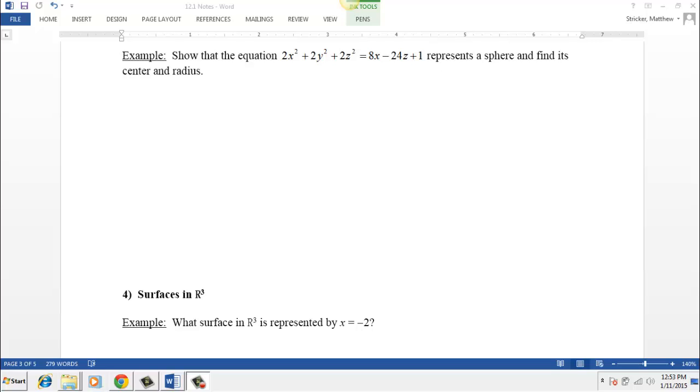Well, right now it doesn't really look much like a sphere except for the fact that it does have an x squared and a y squared and a z squared, which many times we associate with a sphere, especially since all three of those terms are positive. But if we're going to show that it's a sphere, and not only that, but find its center and radius...